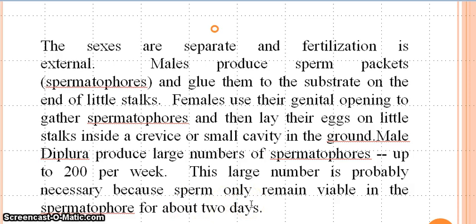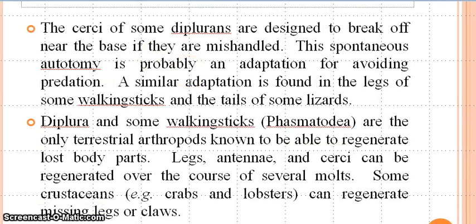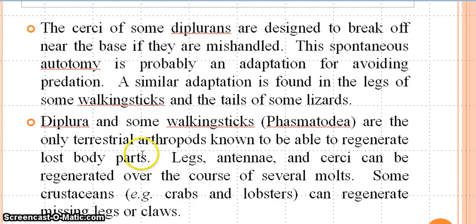The cerci of some diplurans are designed to break off near the base if mishandled. This spontaneous autotomy is probably an adaptation for avoiding predation — a similar kind of autotomy is present in lizards, which have specific breaking points in their tails. A similar adaptation is also found in the legs of some walking sticks and the tails of some lizards. Diplura and some walking sticks are the only terrestrial arthropods known to be able to regenerate lost cerci; antennae and cerci can regenerate over the course of several molts.